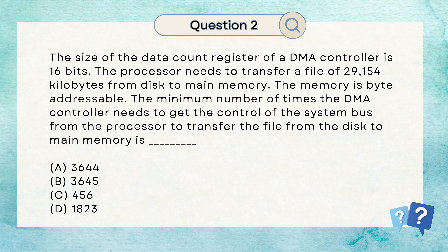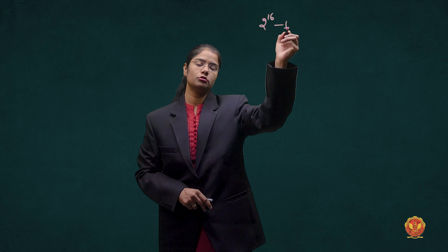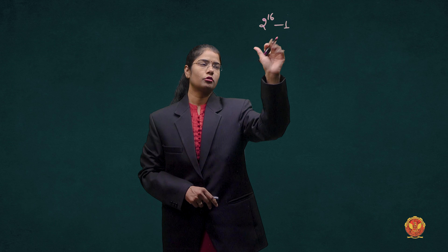First of all, you will know what is the data count. The data count tells the number of words or number of bytes we have to transfer to DMA. Here we have to transfer the file from disk to main memory. The maximum value with a 16-bit data count register is 2^16 - 1, which equals 65535.